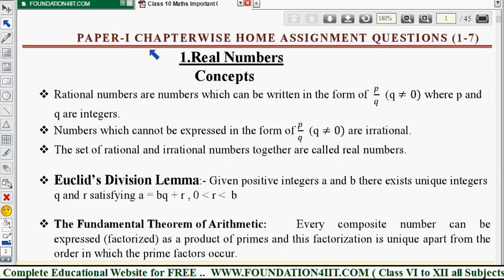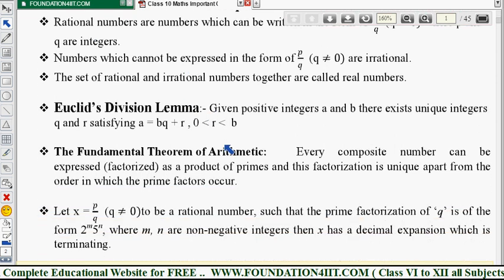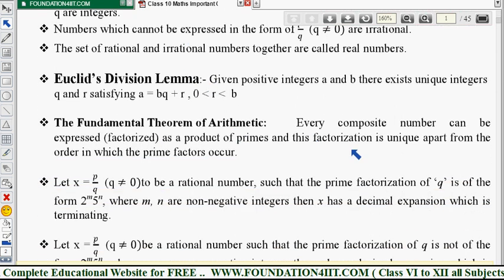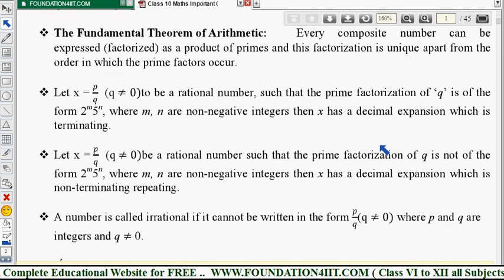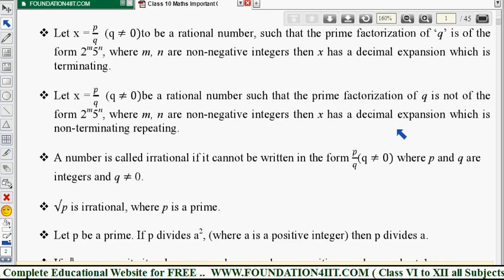This PDF file is around 45 pages total, with approximately three pages per chapter. For example, if we take real numbers, the first page has complete concepts. What is real numbers, Euclid's Division Lemma, what is Fundamental Theorem of Arithmetic - just some basics.